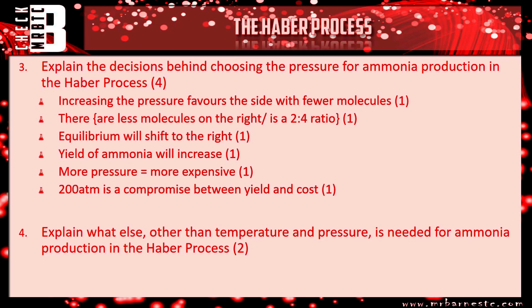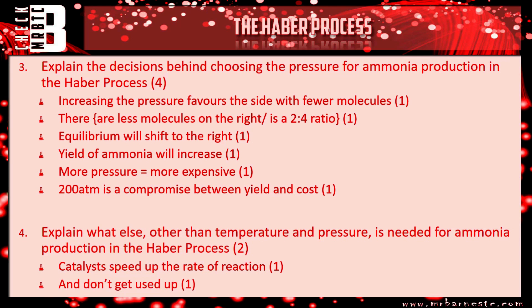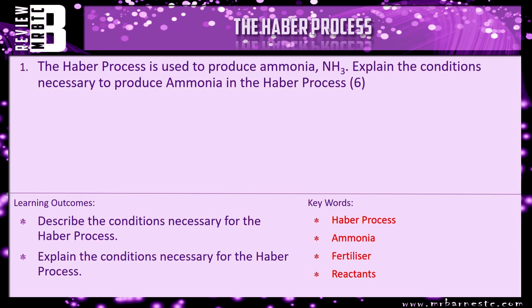Finally, explain what else other than temperature and pressure is needed for ammonia production in the Haber process. We know it's a catalyst — and what do they do? They speed up the rate of reaction. What's special about them? They don't get used up. That brings this video to an end. The review question is: the Haber process is used to produce ammonia, NH₃ — explain the conditions necessary, covering all three conditions and why we use them.